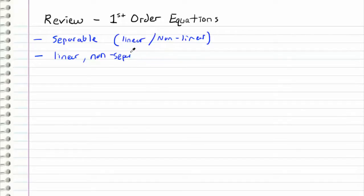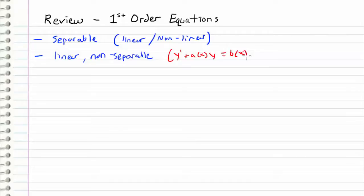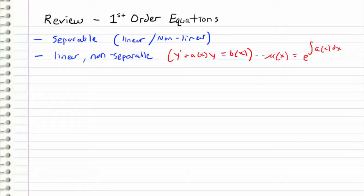The second type that we looked into was the linear non-separable case. These included types of the form y prime plus a(x) times y is equal to b(x). Since these are non-separable, we weren't able to use straight up integration. Instead, we were able to use something called an integrating factor, which we called mu of x. We defined mu of x as e to the integral of a(x) dx, and we multiply it through the whole equation. By doing so, we were able to integrate both sides successfully and solve the problem.